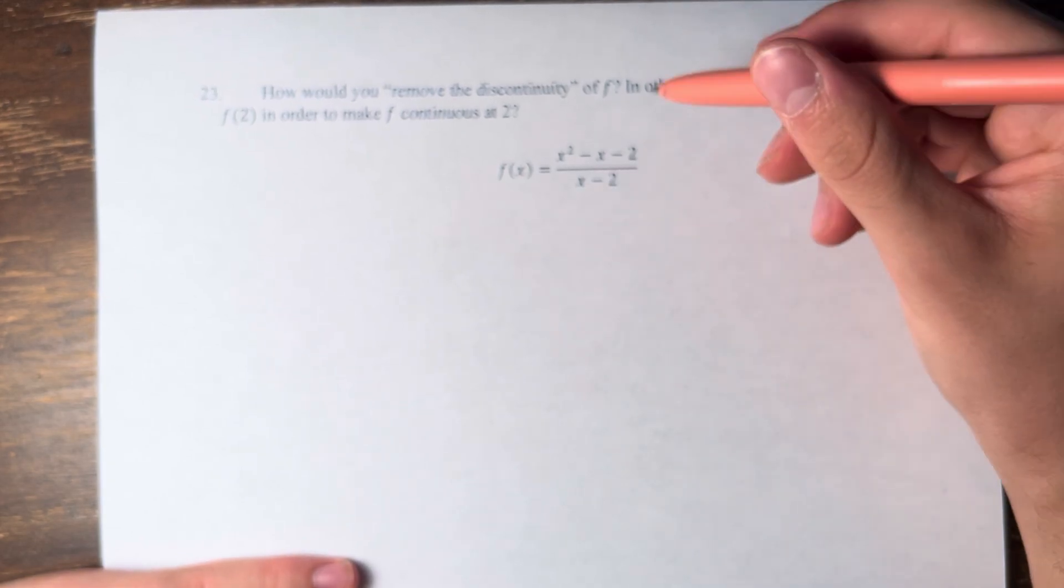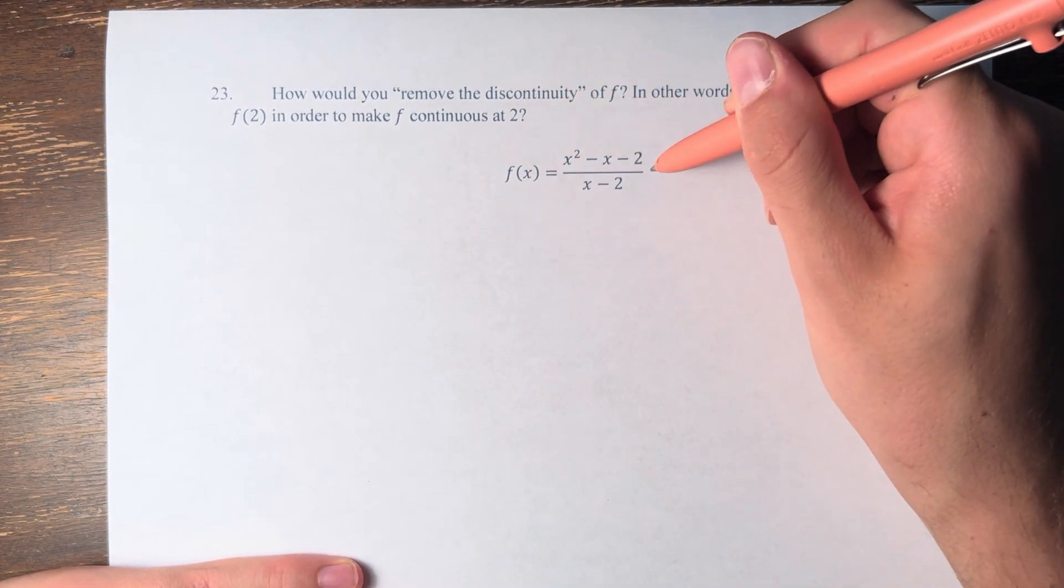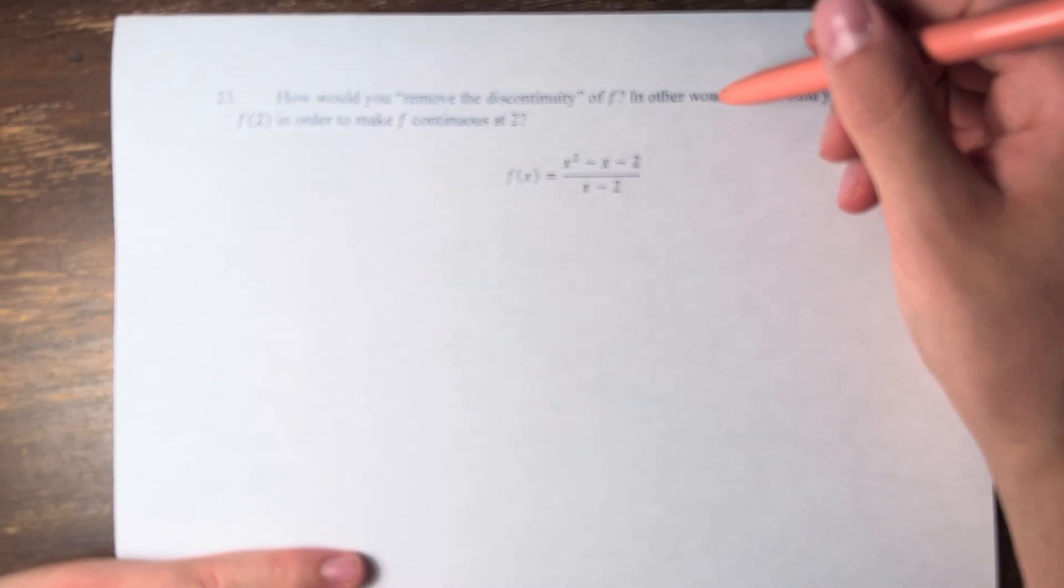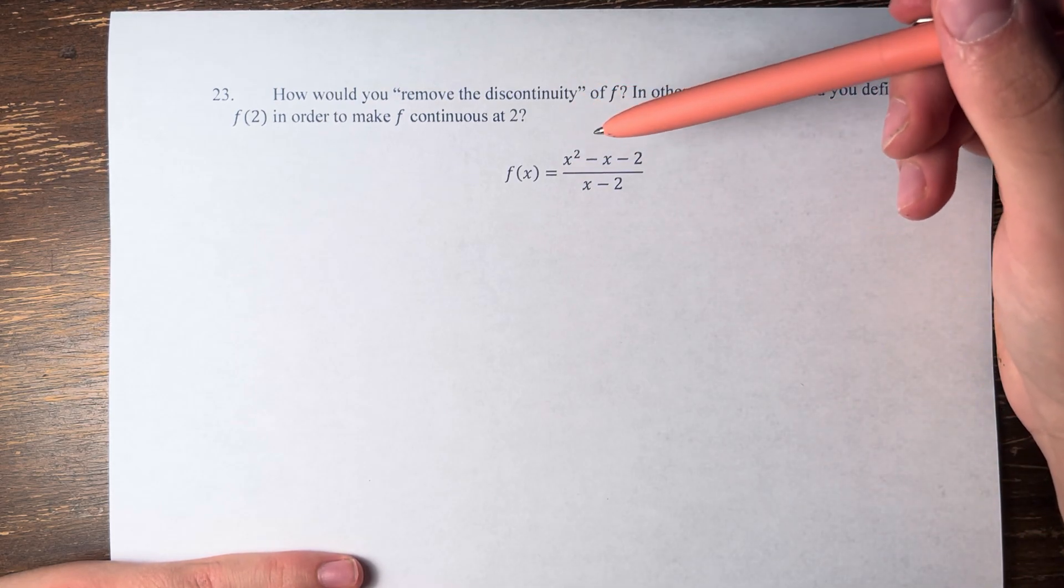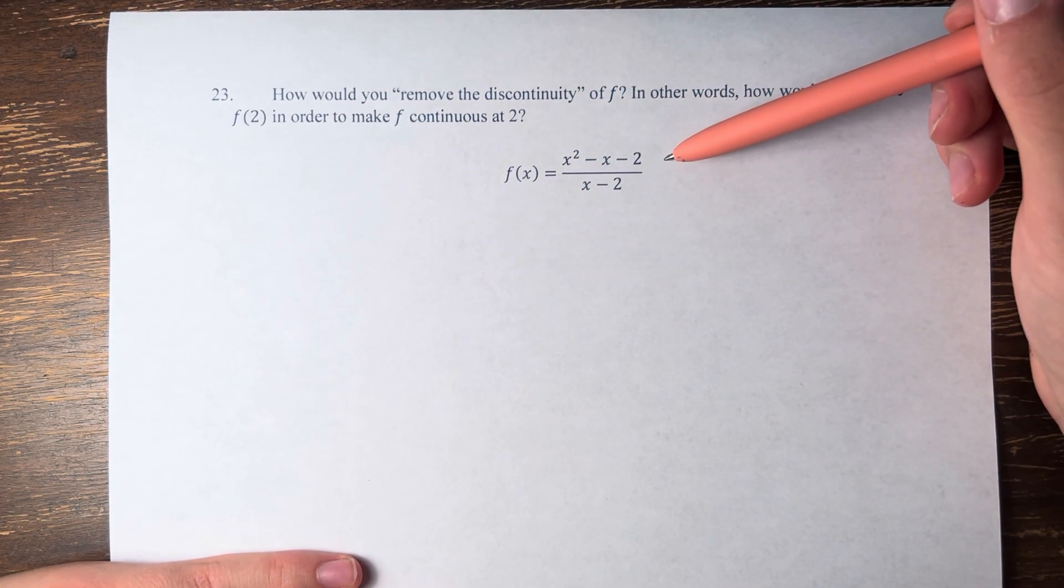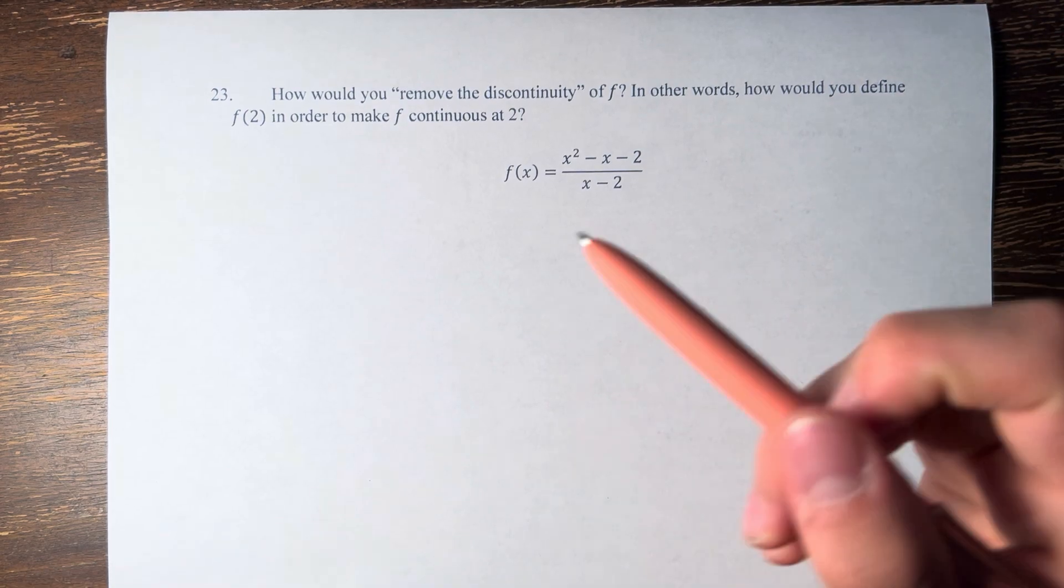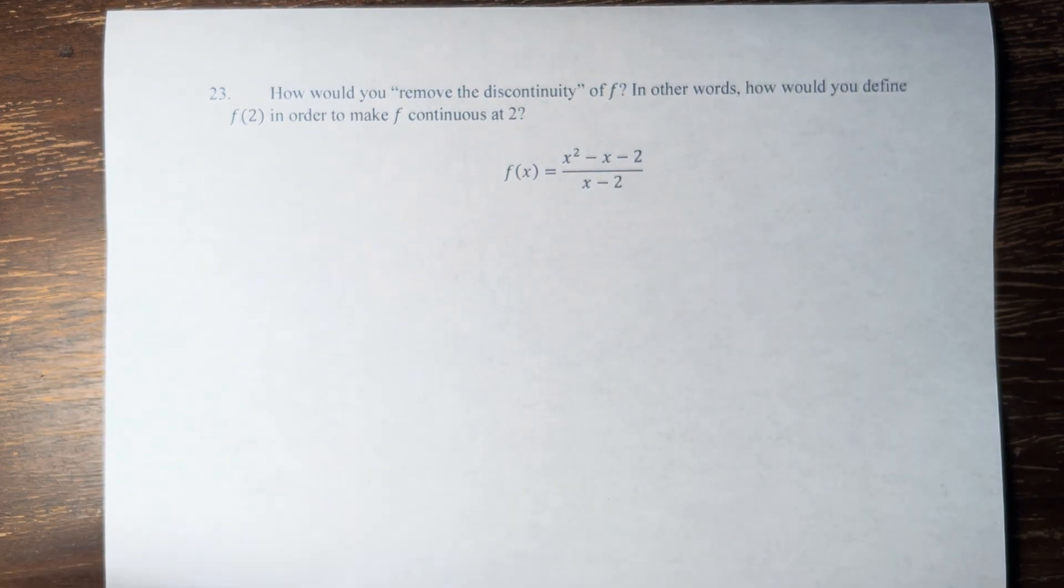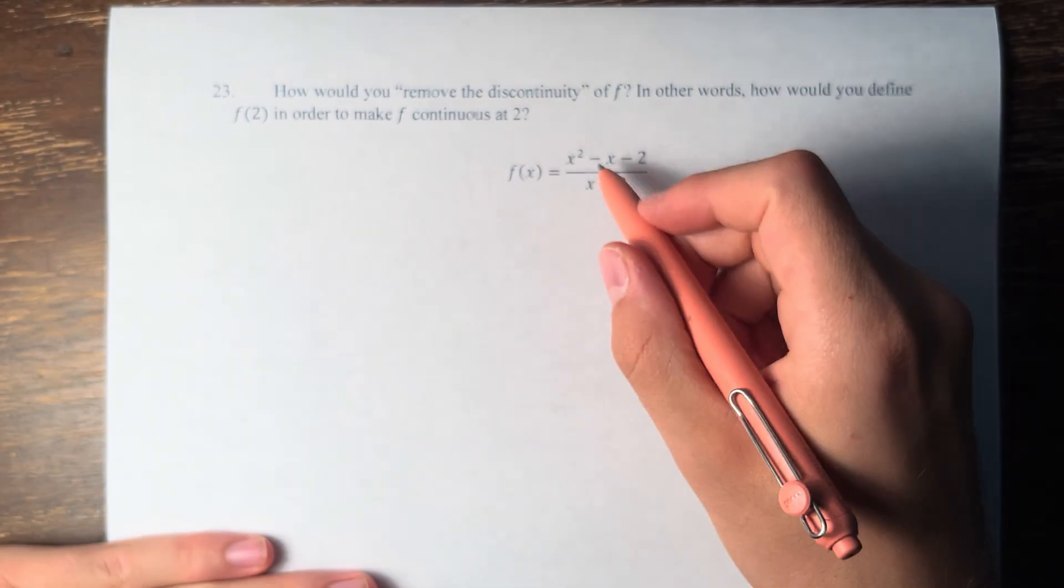So what we're going to do here is we have this rational expression. And if we cancel out a factor in the numerator and the denominator, it's going to keep the same exact function, except at a singular point.